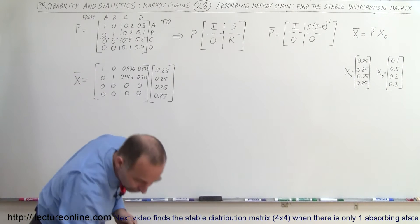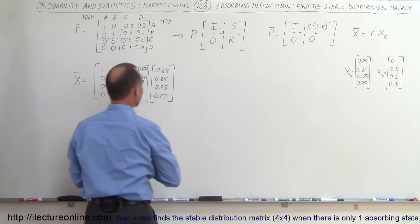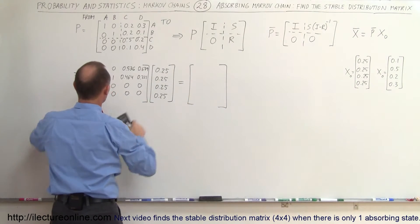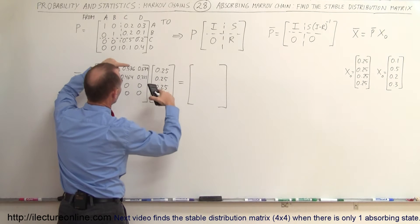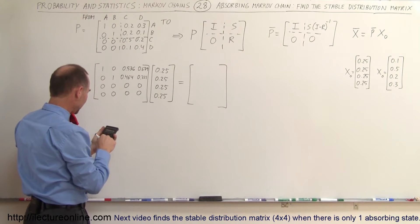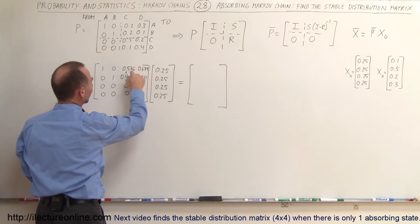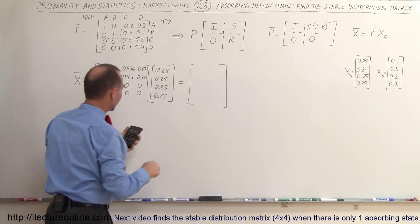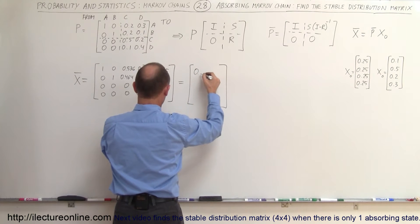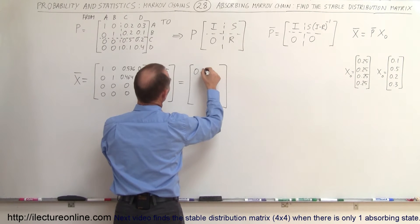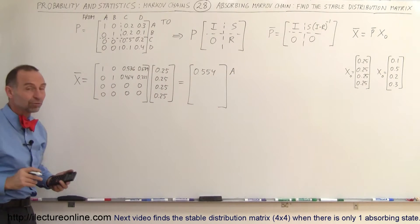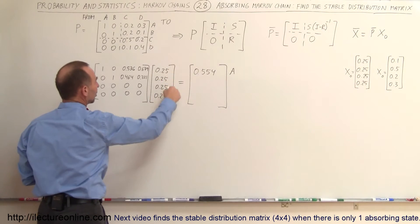We're probably going to need a calculator for this. To find the first element we multiply this row times this column: 0.25 plus 0 times that equals 0, then plus 0.25 times 0.536, plus 0.25 times 0.679, which equals 0.554. This is for state A.